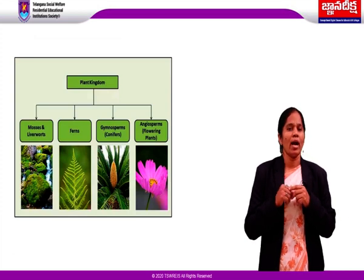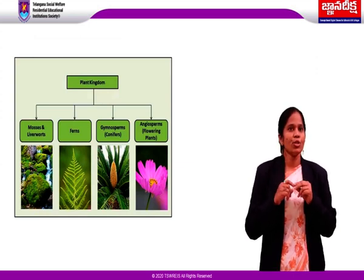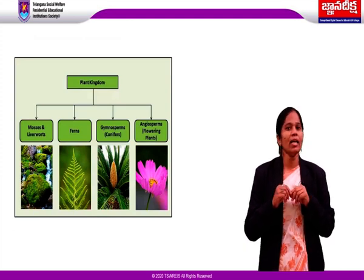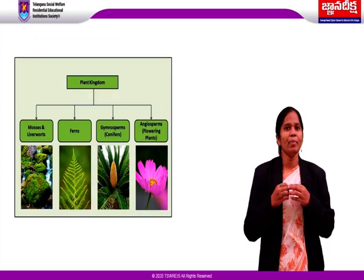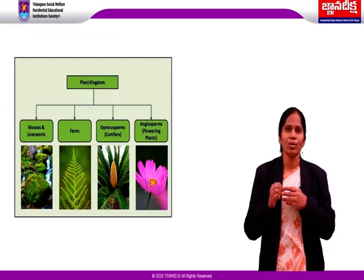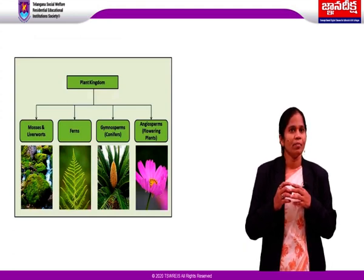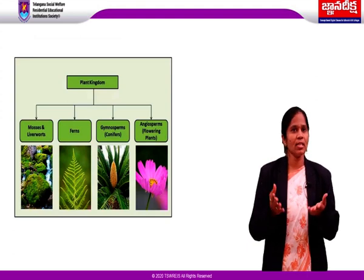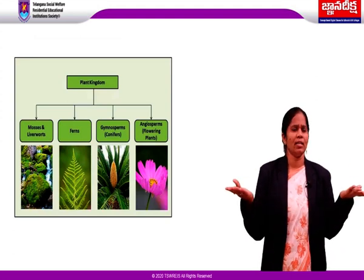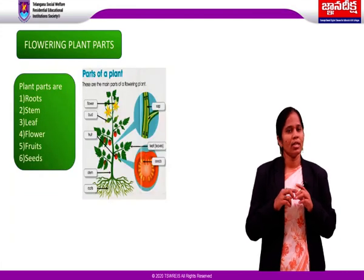Conifers are also called gymnosperms. Flowering plants are also called angiosperms. These angiosperms are divided into monocots and dicots. In the plant kingdom, angiosperms are well-developed plants. Plants are multicellular eukaryotes with cell walls made up of cellulose. The most striking and important feature of plants is their green color pigment called chlorophyll, which is helpful in photosynthesis. In a plant, different parts are present: root, stem, leaves, flowers, fruits, and seeds.